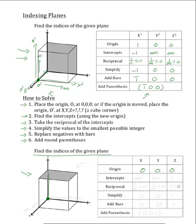Starting at the origin and traveling along the x-axis, the plane never intercepts it, so we call the intercept infinity. Going back to the origin, the same thing will happen to the y-axis — the plane never crosses it, so the intercept is infinity. Finally, traveling along the z-axis, the plane intercepts it at one. Taking reciprocals: one over the x-intercept (infinity) equals zero, one over the y-intercept (infinity) equals zero, and one over the z-intercept (one) equals one.